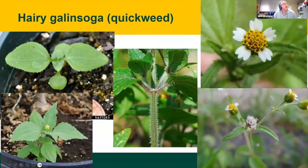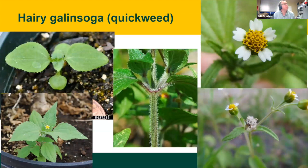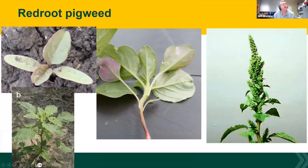Hairy galinsoga, also called quickweed, is an aster species with a spatulate-type cotyledon and opposite leaves at every node. It's very hairy and very fast-growing, which is why it's called quickweed. It has yellow disc flowers and white ray flowers. You can see tufts of hair on the seeds when they're about to fall off — again, at that point you've already missed the window to manage seed production. It's very prevalent in many gardens.